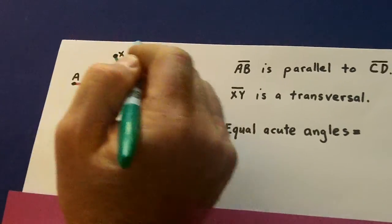Now if this angle is 50, then this acute angle is also 50. Let's see what E is. E is also acute, 50 degrees. Notice how those add up to 180.